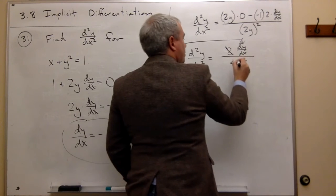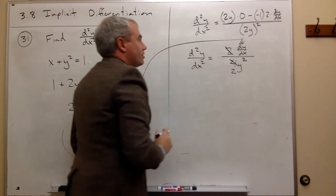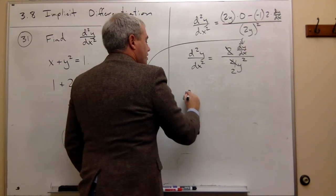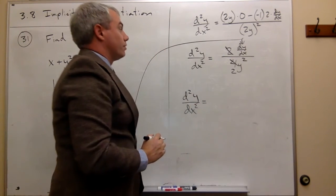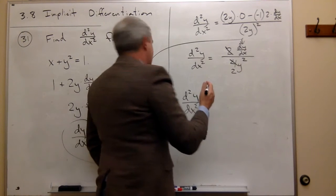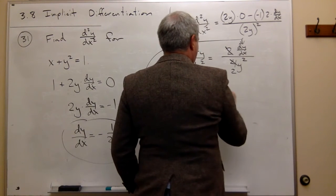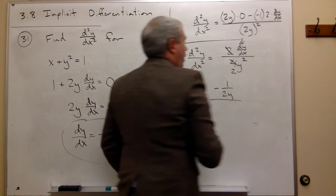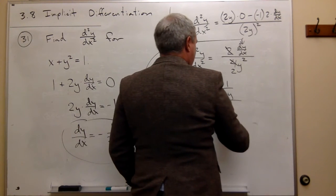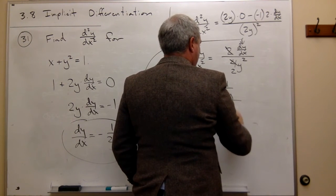By the way, one of the 2s cancels with this 4, giving me a 2 on the bottom. So we can write d squared y over dx squared is equal to, well, dy dx is on top, but that's negative 1 over 2y. And on the bottom, I have 2y squared.